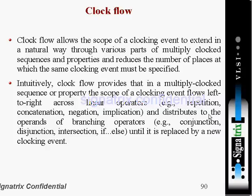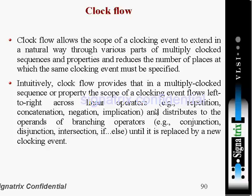Clock flow distributes to the operands of branching operators. The branching operators include conjunction and disjunction, intersection, and if-else. Clock flow continues until it is replaced by a new clocking event. So to summarize: clocking event flows from left to right across linear operators and distributes to the operands of branching operators until it is replaced by a new clock.